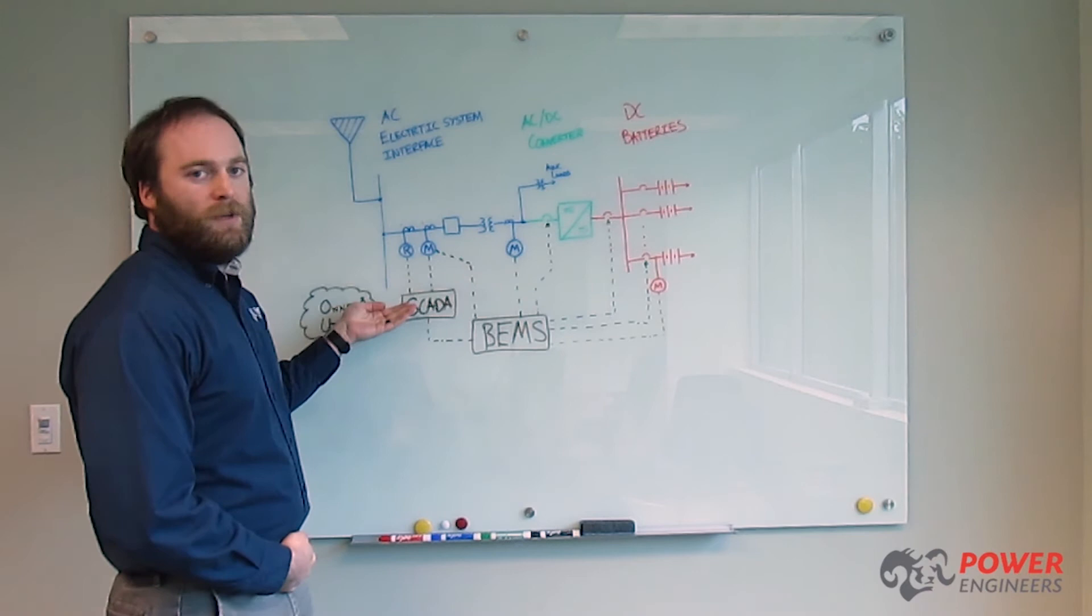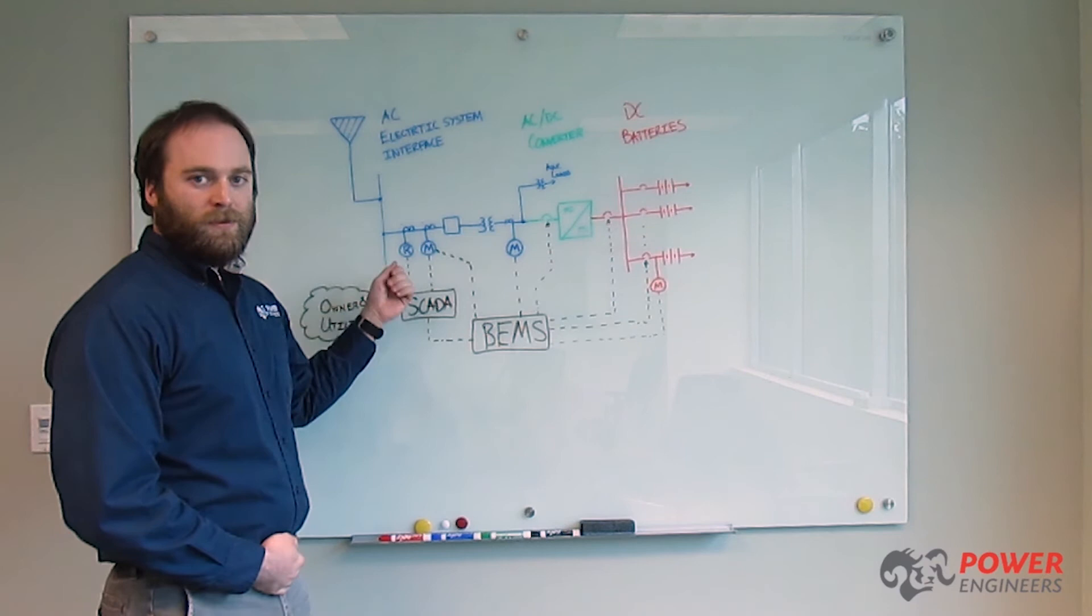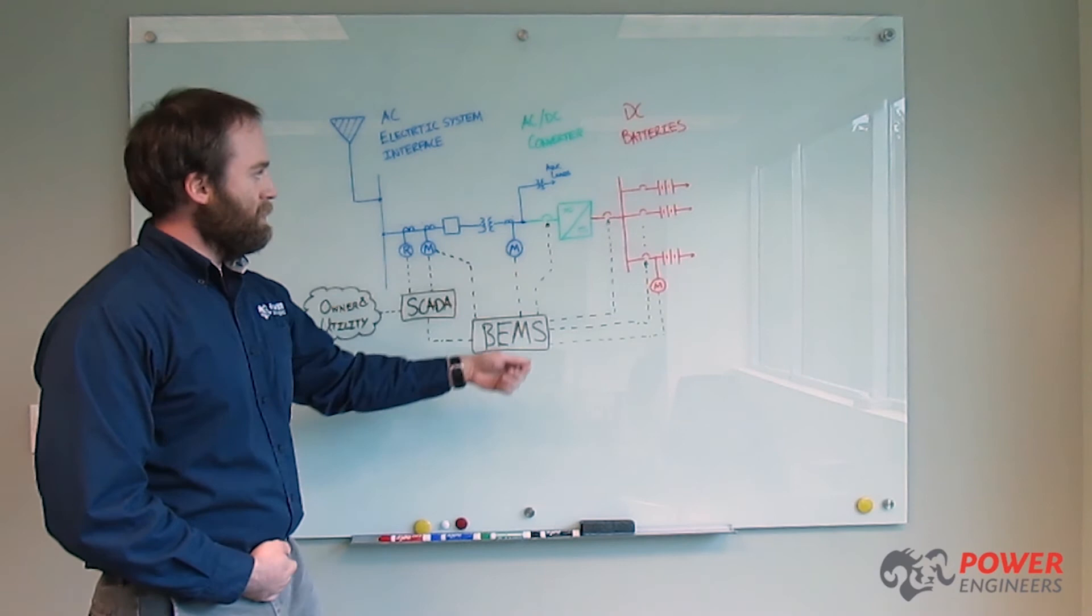On the AC side, we have both low voltage and medium or high voltage AC equipment. This includes instrument transformers, relays, meters, circuit breakers, and step-up transformers.